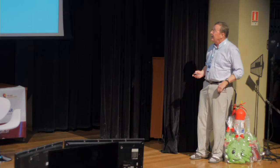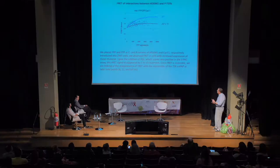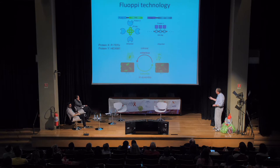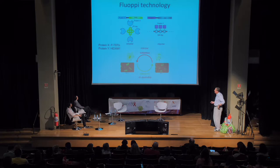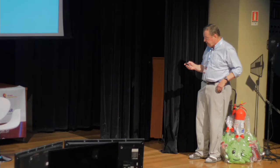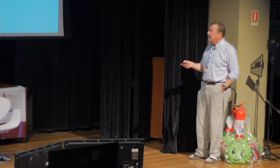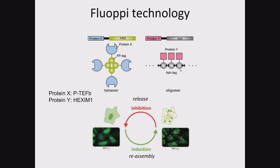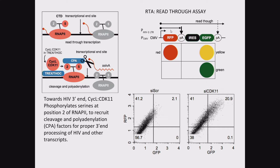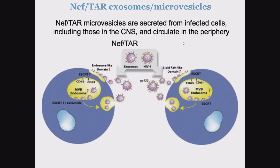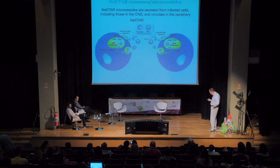We also have an assay for the reassembly of the inactive complex — P-TEFb going back with HEXIM to the 7SK snRNP — which is useful not just for HIV, but also for cancer therapy, because HEXIM turns out to be the most potent cell growth-inhibiting, anti-proliferative, and differentiation agent known. HEXIM will basically stop any cell from growing if it's in the 7SK complex. We also have an assay for read-through transcription — a dual fluorescent assay for ignoring the poly-A site and measuring levels of CDK11 — which can also be used for high-throughput screening.